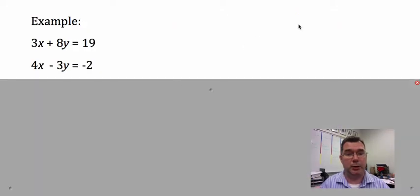We're going to look at this example: 3x + 8y = 19 and 4x - 3y = -2. The coefficients in front of the x's are different. If I wanted them to be the same, I could make them 12s because 12 is the least common multiple of 3 and 4. If I wanted my y coefficients to be opposites, I could make them 24s, one positive 24 and one negative 24.